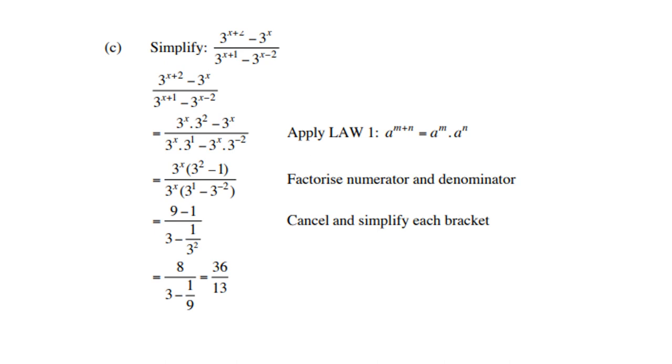At the bottom, again, 3 to the power x is the common factor. The 3 to the power x's will cancel, and I'm left with 3 squared minus 1, which is 9 minus 1. At the bottom, 3 to the power 1 minus 3 to the power minus 2. Again, the calculator is allowed here. You can use the calculator to get to the answer 36 over 13.